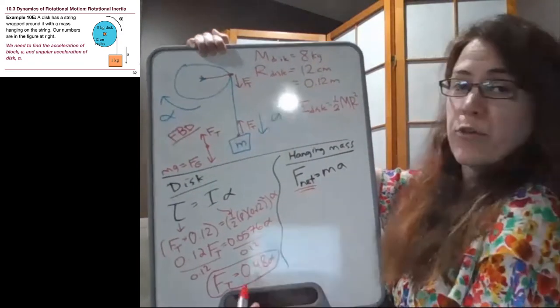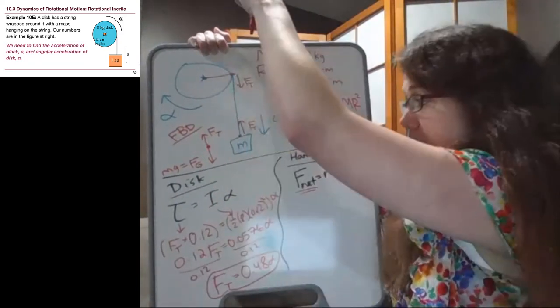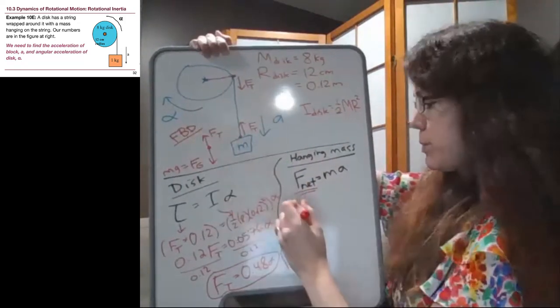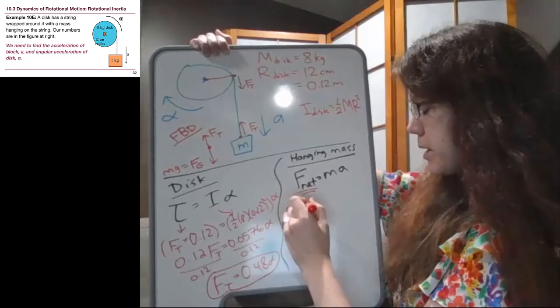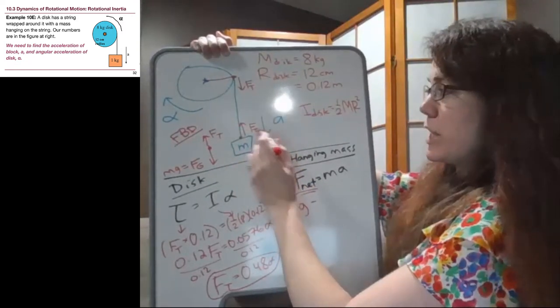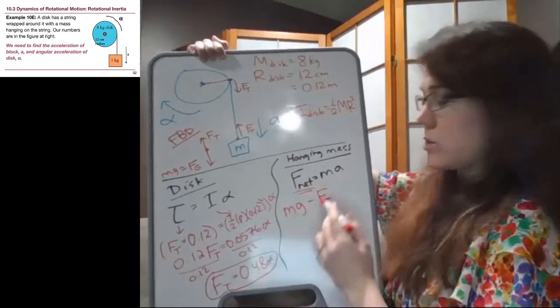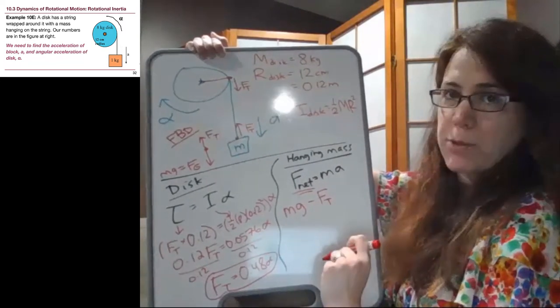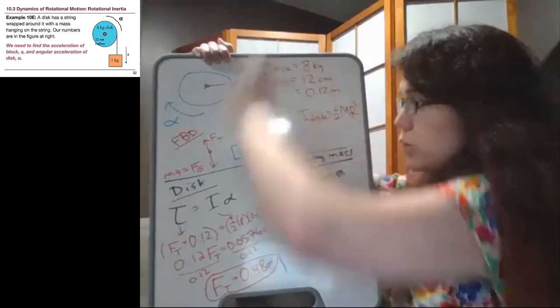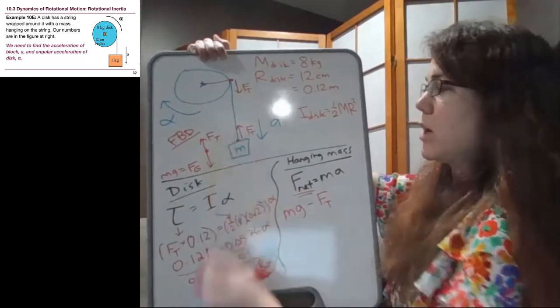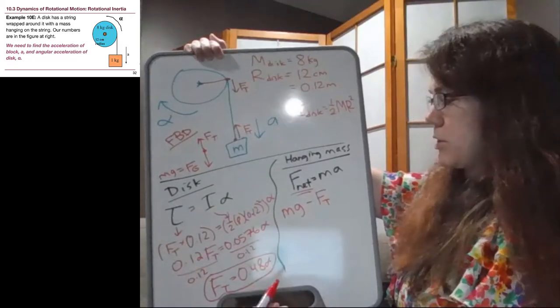And so when we write out F net, we are accelerating in the downwards direction. So we need the downward force to be positive. And then the force that's opposite the acceleration, tension, we subtract off. That is the same thing we did all throughout chapter four, that we are moving downwards, accelerating downwards. So that's our positive. And we're subtracting off the tension, it's in the opposite direction.